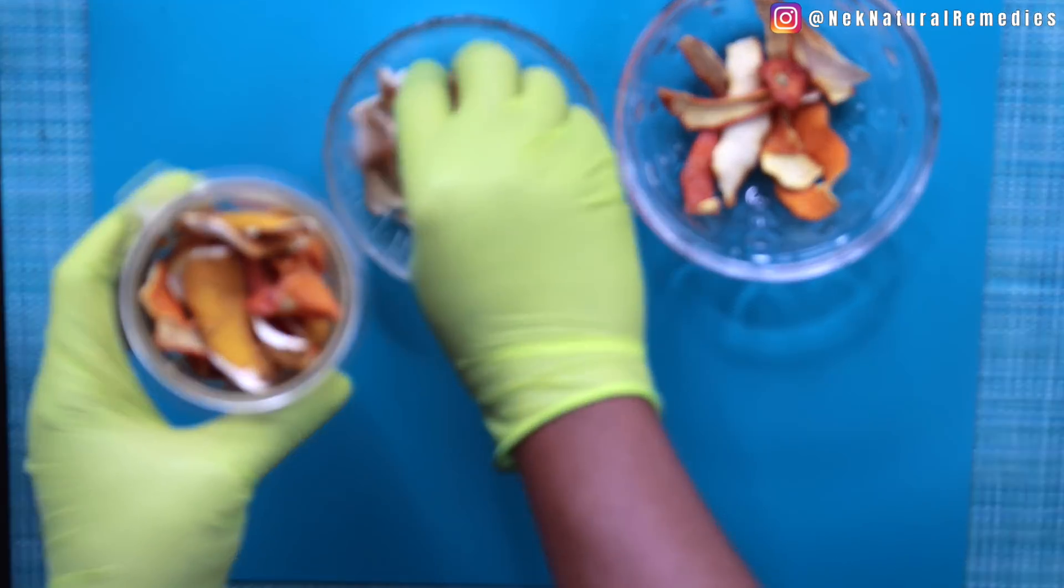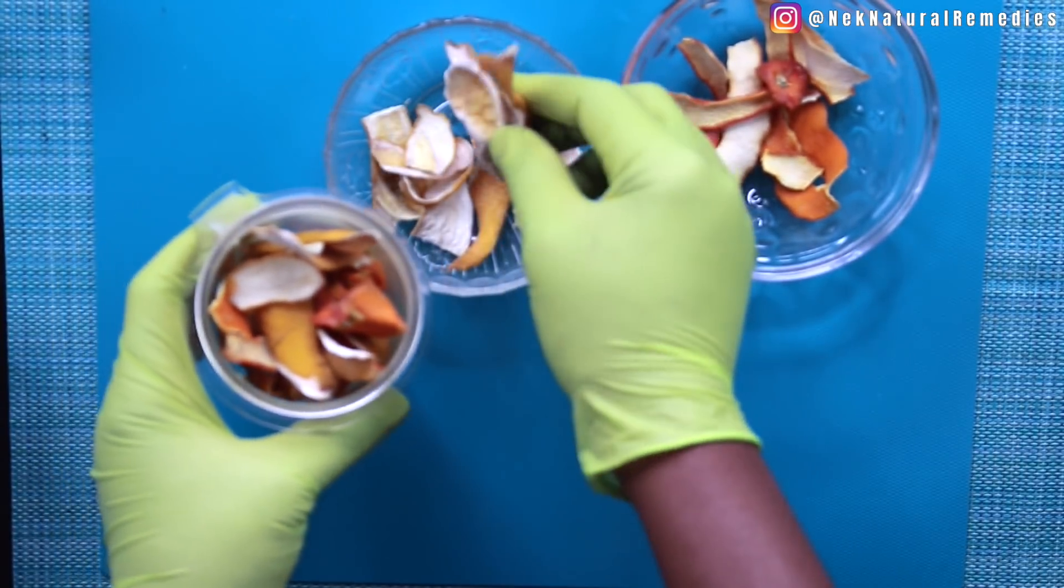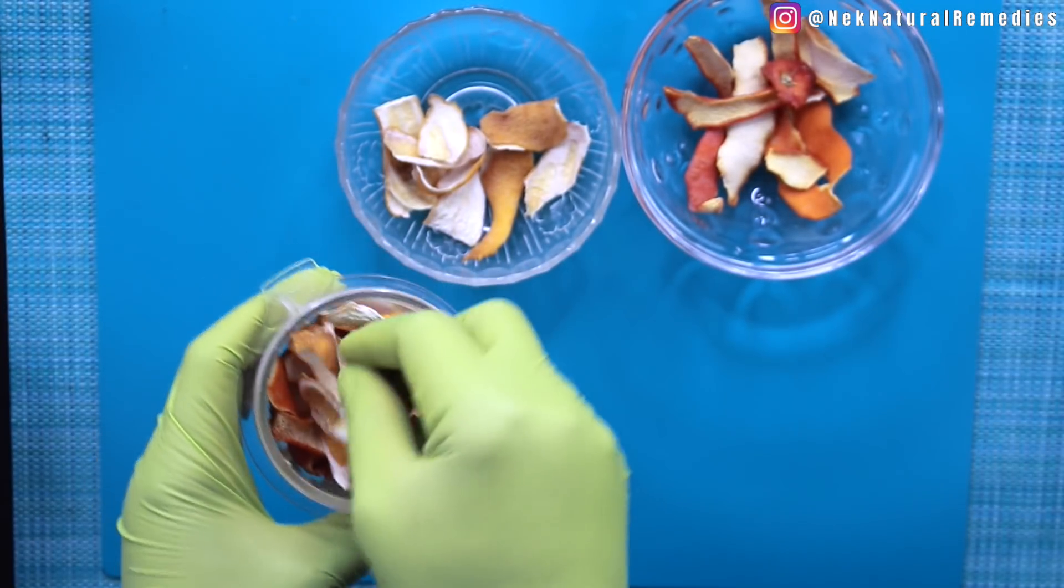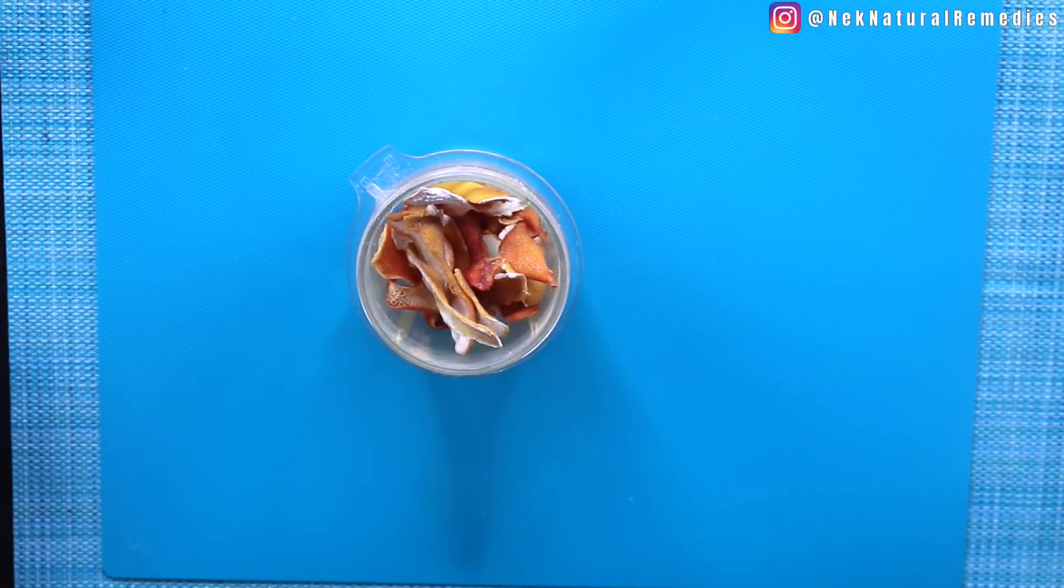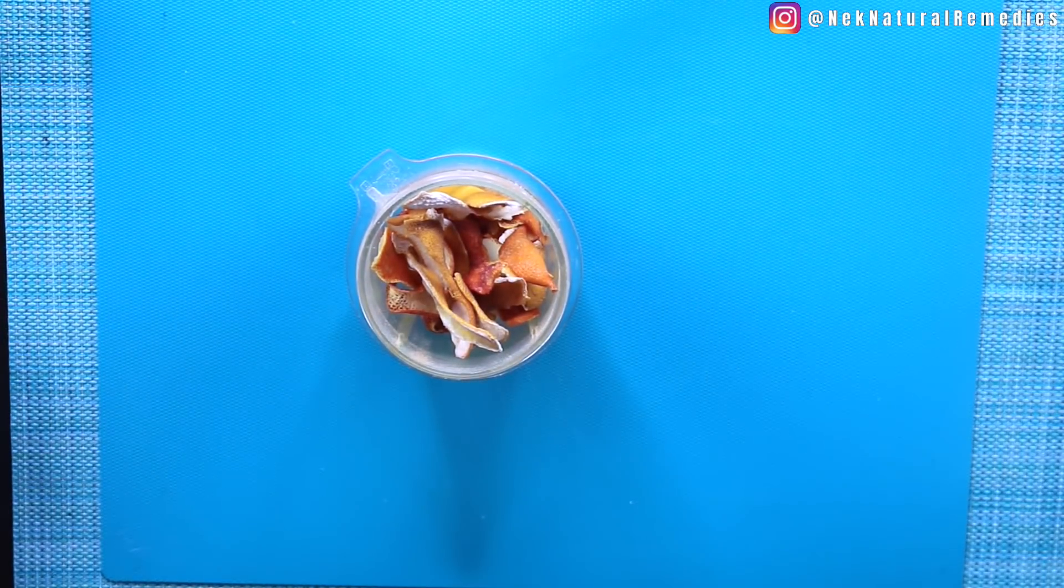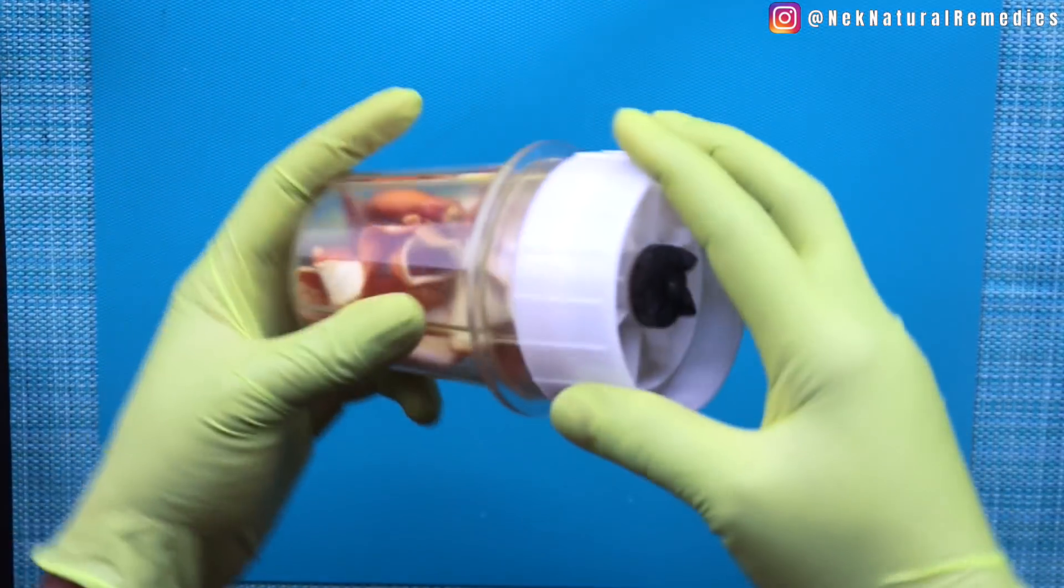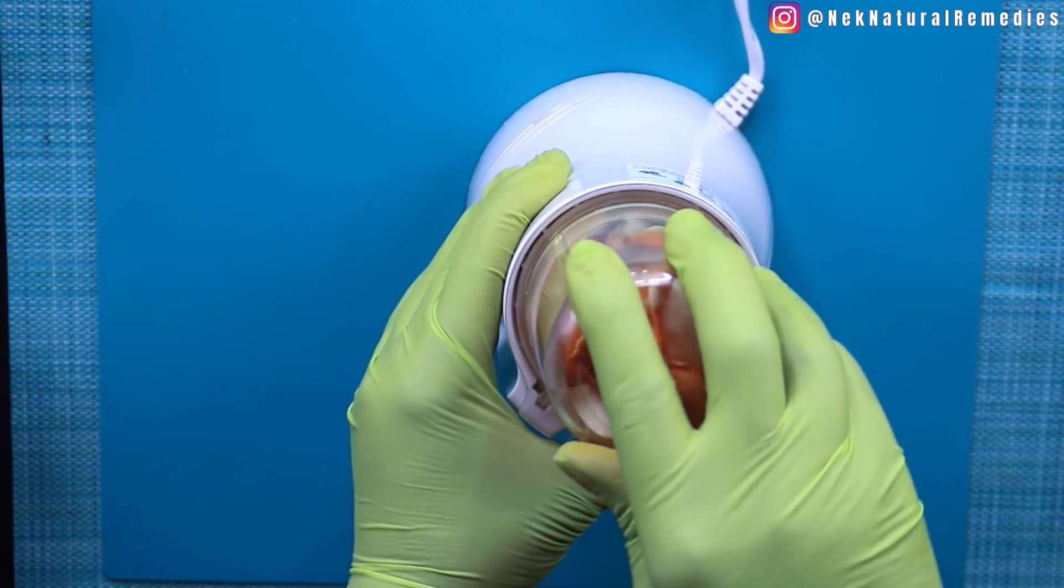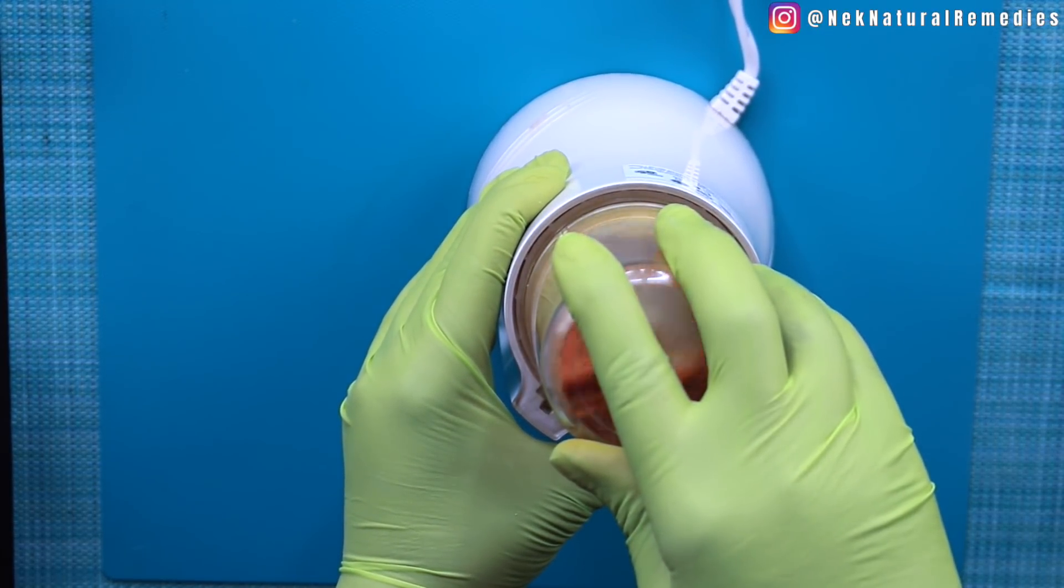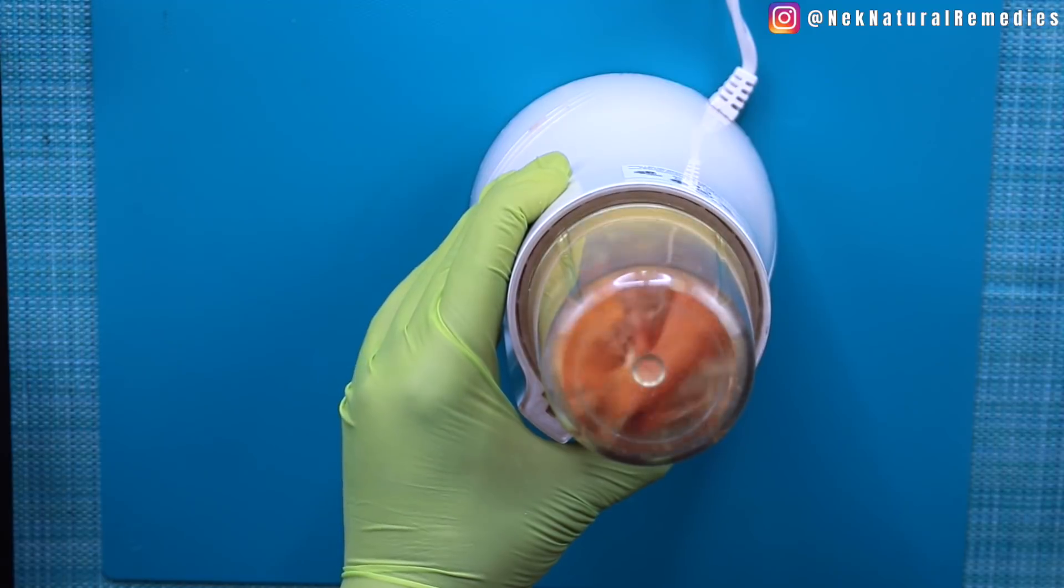Orange and lemon peels have antibacterial and antimicrobial properties which work well in treating acne and oily skin. They also have skin lightening agents which help to remove dark spots, scars and blemishes.